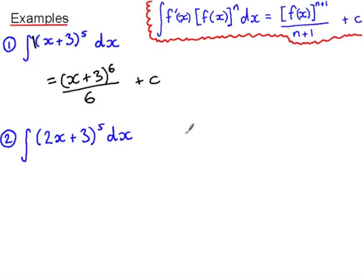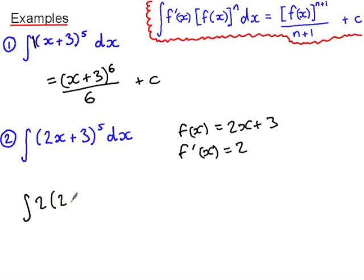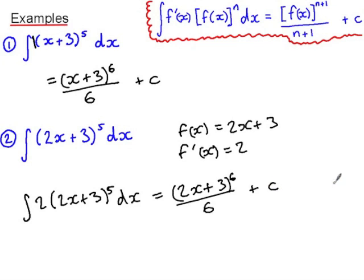In the second example, f(x) is 2x+3 and f'(x) is 2. Using the formula, the integral of 2·(2x+3)^5 is (2x+3)^6 over 6 plus c. But we need to adapt this slightly: to get (2x+3)^5 rather than 2·(2x+3)^5, we divide by 2. So our final answer is (2x+3)^6 over 12 plus c.